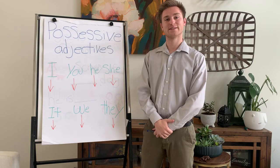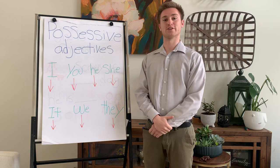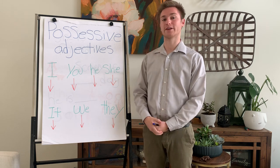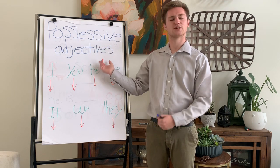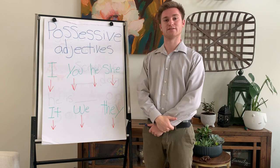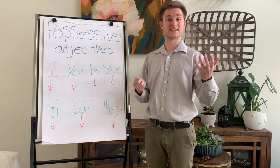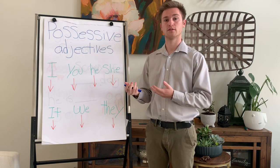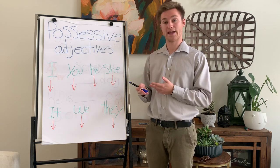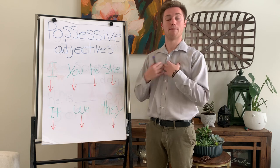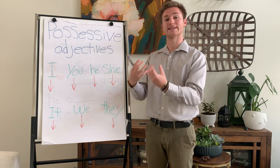Hello everybody! Welcome to lesson 5 of your English tutor. Today we will be talking about possessive adjectives. So what is a possessive adjective? A possessive adjective lets you know what something belongs to. For example, a pet — like, this is my cat, my dog. These belong to me. It is mine.